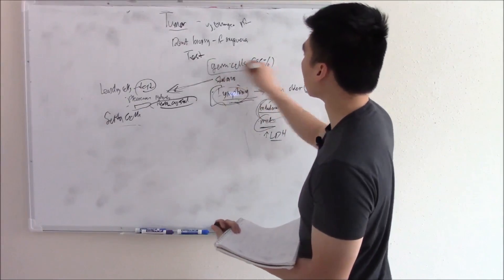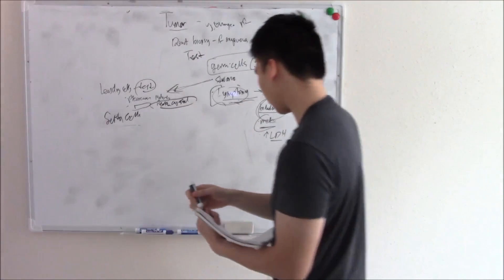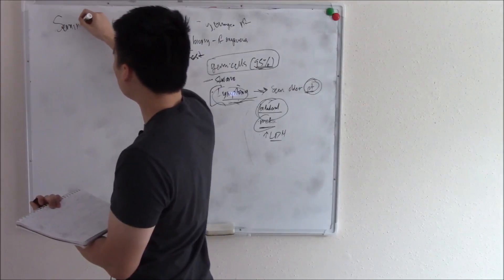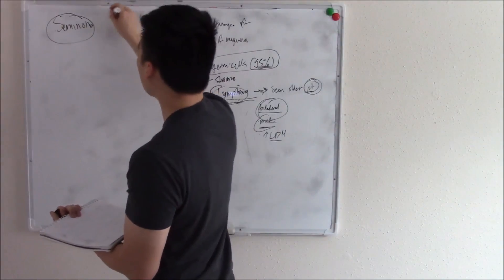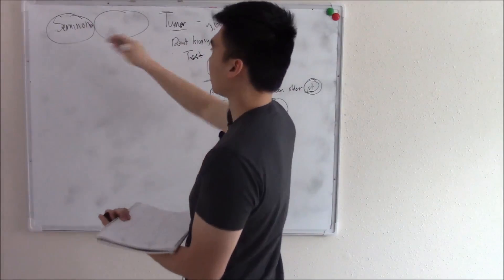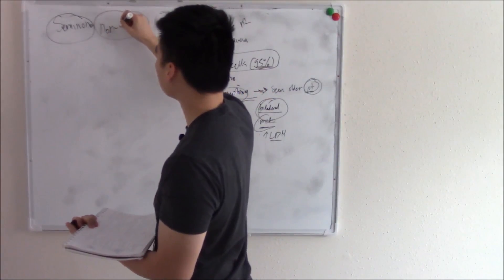Germ cells are going to be your big ones. Again, that's 95% of your testicular cancers. So germ cells are broken up into two types. The vast majority of germ cell tumors are going to be seminomas. There's another category that has about four different types, but because seminomas are the most common, we just call this whole category non-seminomas.